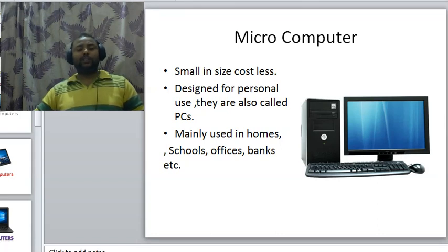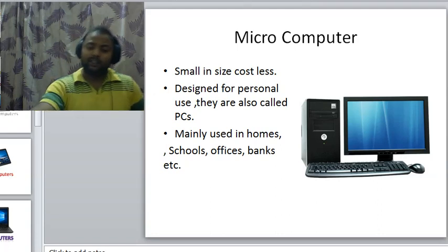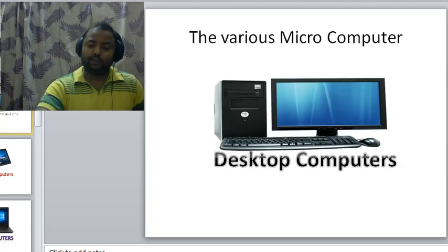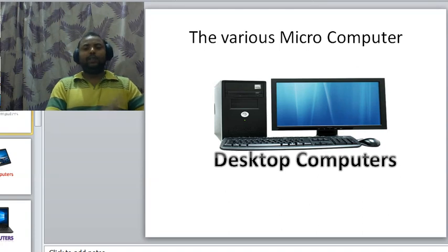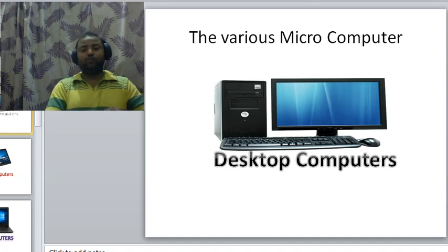There are various kinds of micro computers we use in our day-to-day life. One of the micro computers is desktop computers. It consists of a monitor, a CPU, a keyboard, and a mouse. These types of computers are used at home, at school labs, in offices, and many more places.